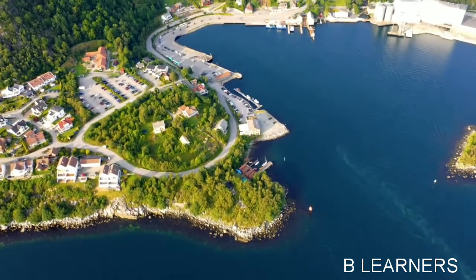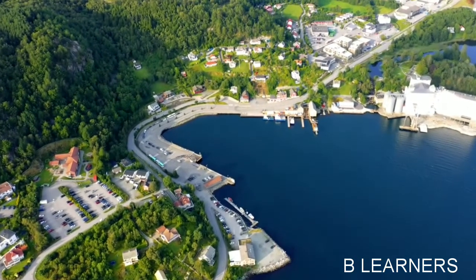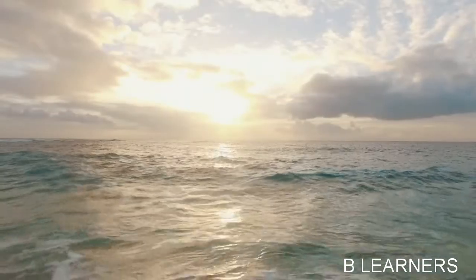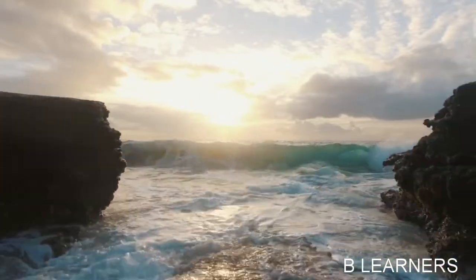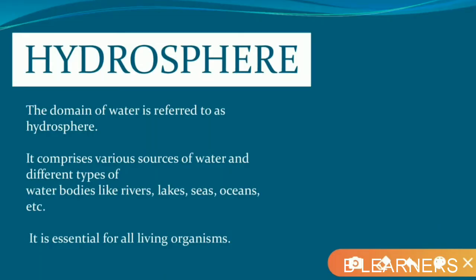When we observe the globe, we find that the majority of the earth's surface is covered with water. Now we'll understand the role of the hydrosphere in our environment. The hydrosphere is the domain of water — the part of the earth's surface covered by water, including rivers, lakes, seas, and oceans. The water in the hydrosphere is present in all three forms: solid, liquid, and gaseous.